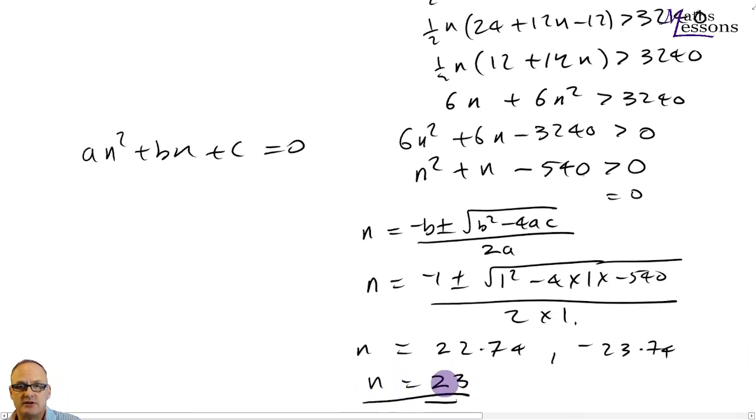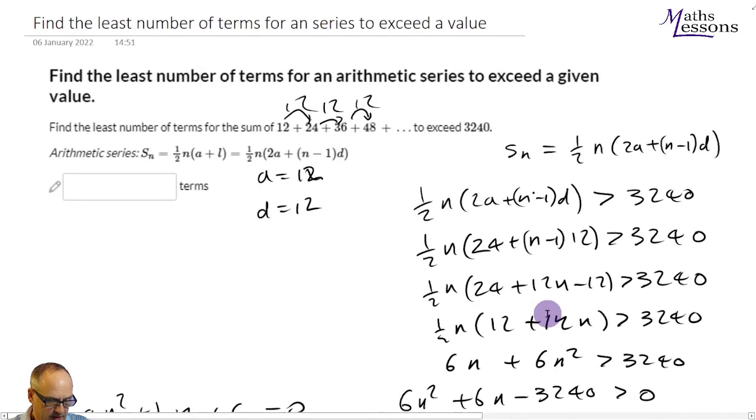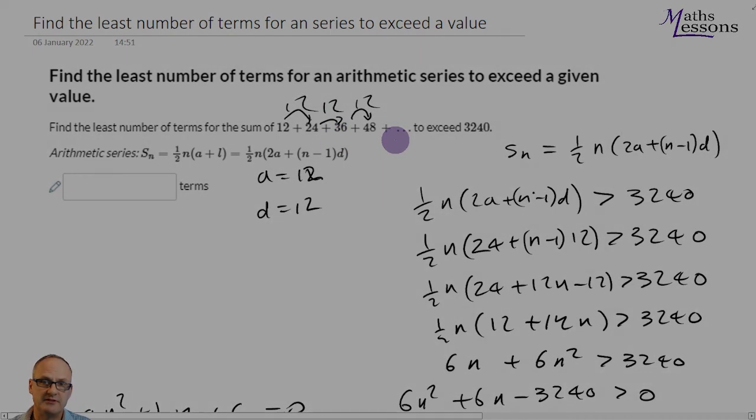So the answer to our question, find the least number of terms for an arithmetic series to exceed a given value is going to be when you have 23 terms in this series.